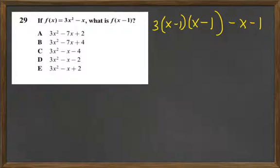From there, we have to do the FOIL method. We get x squared minus 1x minus 1x plus 1. And then we still have the minus x minus 1.